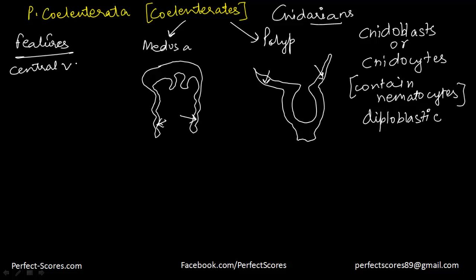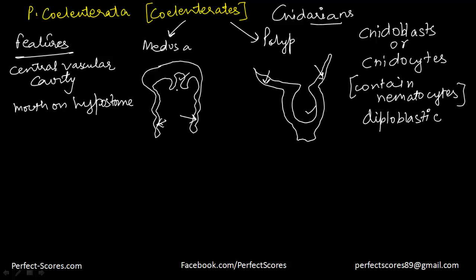All of them have a central gastrovascular cavity — this is the central cavity in both medusa and polyp forms. There is a mouth which is located on the hypostome, which is the opening of the cavity. Digestion is not only intracellular; it takes place outside the cells as well, so it is both extracellular and intracellular. Some cnidarians — for instance corals — have a skeleton composed of calcium carbonate.